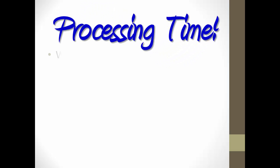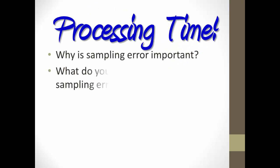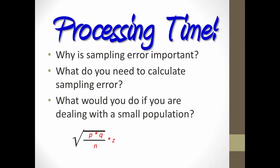Processing time, why is sampling error important? What do you need to calculate sampling error? Now, obviously, you need the formula, but more specifically, you need the number of respondents answering the question, the results of the question, p and q, and the z-score associated with the confidence level you're using. And what do you do if you're dealing with a small population, such as conducting a survey for a small business with only 500 customers? You would apply a finite population correction. You should now be able to understand not only what sampling error is, but how to calculate it.